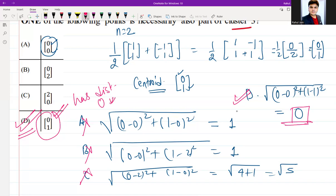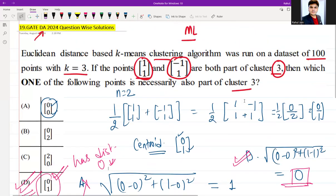Thus we can say that the correct answer is option D. This was GATE DA 2024 machine learning, and option D is the correct answer for this. I hope the question is clear, solution is clear.